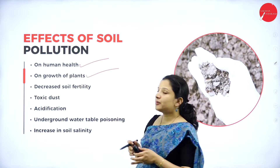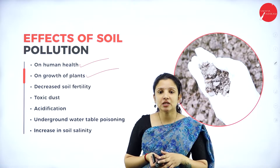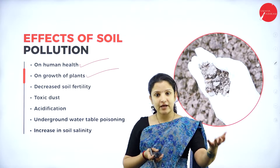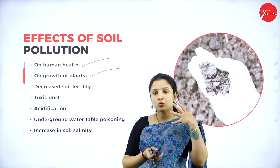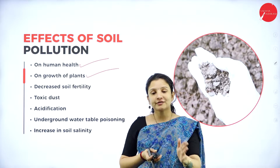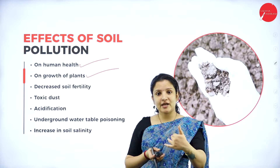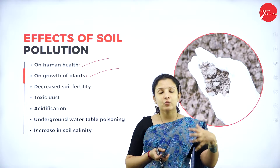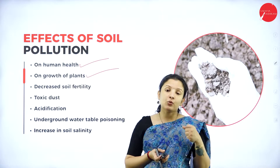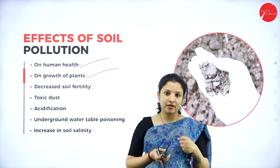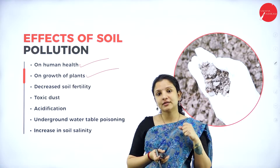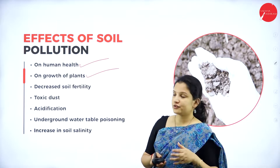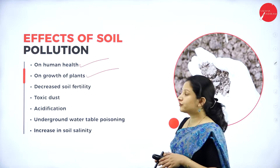Soil pollution can affect the growth of plants. For example, a farmer growing crops near an industry may find that the industry dumps toxic chemicals on nearby soil. During rains or seepage, these chemicals leach into the agricultural fields, where plants absorb them along with good nutrients. The uptake of toxic chemicals can retard or stunt the growth of the plant, and therefore soil pollution affects plant growth.